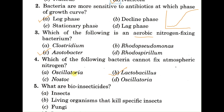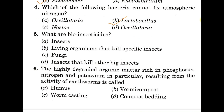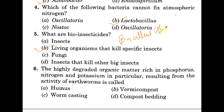Question number five: what is a bioinsecticide? Options: A: living organisms that kill specific insects, B: fungi, C: insects that kill other insects. The correct option is A — living organisms that kill specific insects. One such example is Bacillus thuringiensis.